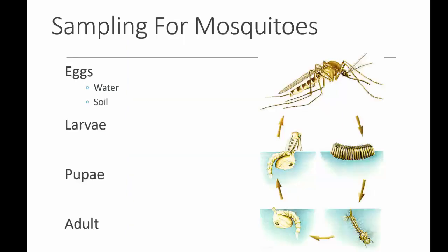When sampling for mosquitoes, you sample in essentially four different ways because you're going to sample for four different stages of the mosquito. We have eggs, larvae, and pupae, which are all aquatic, and we have adults, which are terrestrial.